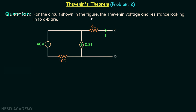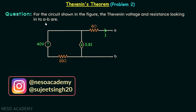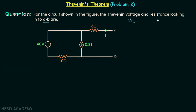For the circuit shown in the figure, AB are the two terminals present in the network. Looking into AB we need to find the Thevenin voltage VTH and the Thevenin resistance RTH. Before I move on to the solution, I want you to give it a try and see if you can find out VTH and RTH in this particular scenario.